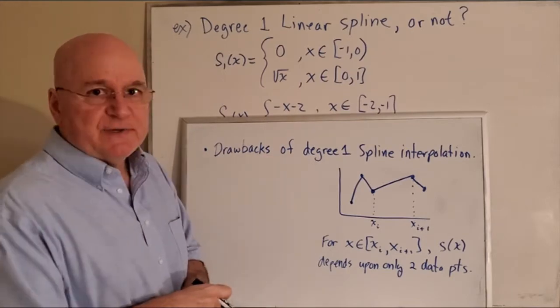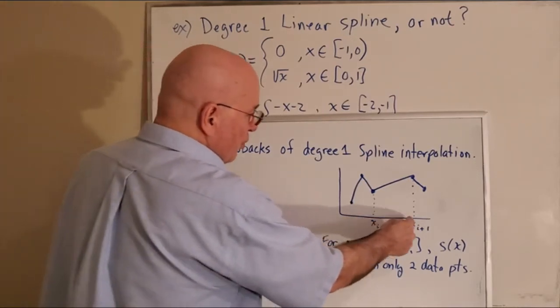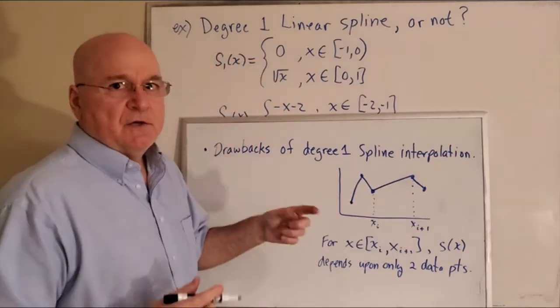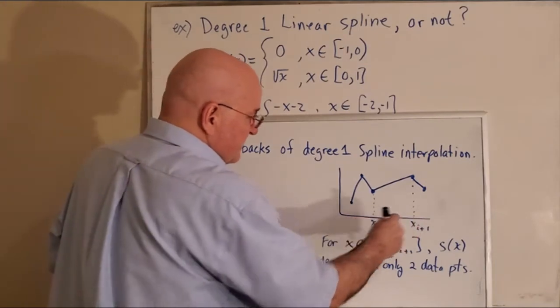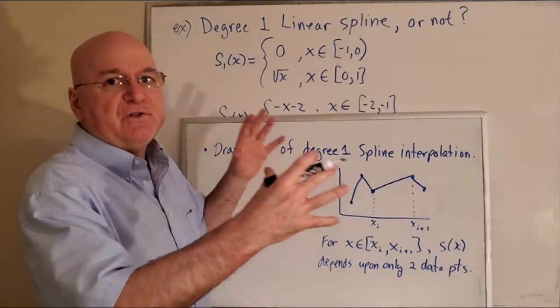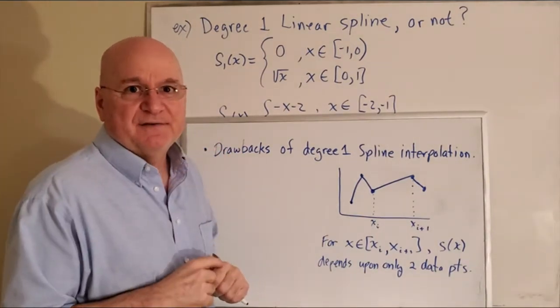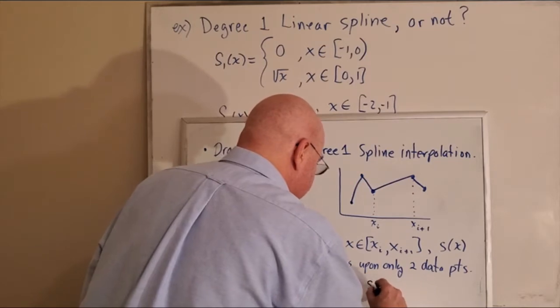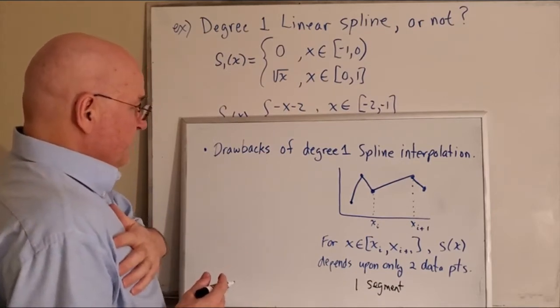One or two drawbacks of degree one spline interpolation. This is a picture of the spline and I marked X_i and X_{i+1} right here. One of the drawbacks is if the X value you're trying to estimate the Y value for is between X_i and X_{i+1}, the value returned depends only on two data points. You could have a thousand or a million data points, and the only two points that matter are the ones that surround that point. So that's a drawback - two data points, which means one segment, just one line segment, is determining the approximation given an X.